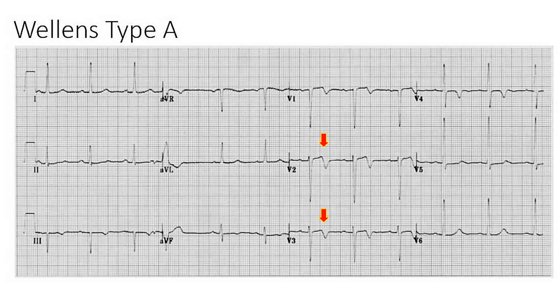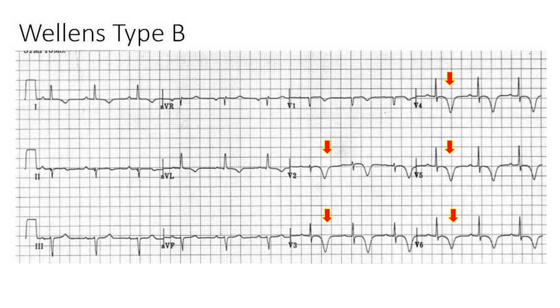Type B Wellens syndrome features deeply inverted symmetric T-waves, greater than 2mm, noted in the precordial leads, most commonly in leads V2 and V3.